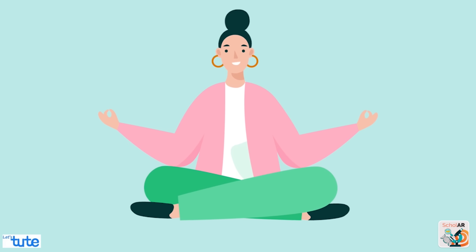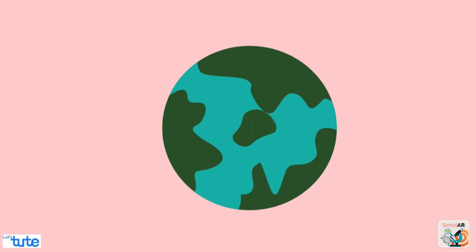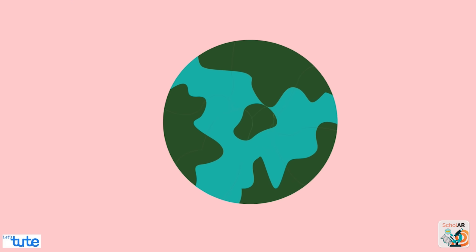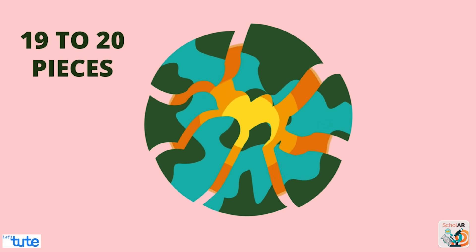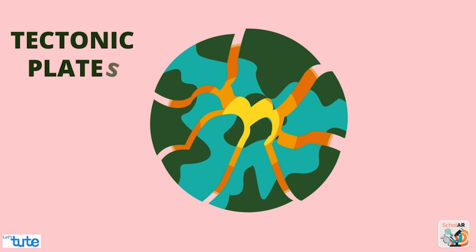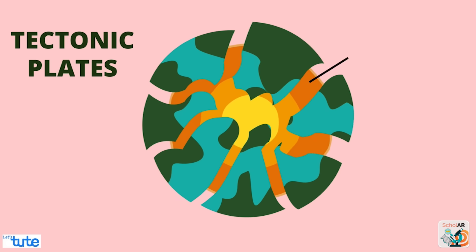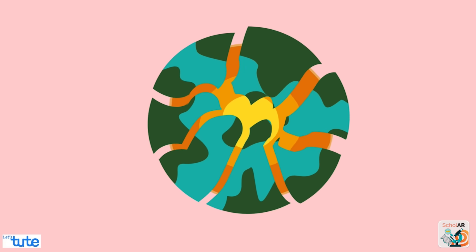Earth is not just one piece — it is made up of jigsaw puzzles of around 19 to 20 pieces which are called tectonic plates. These plates are placed on a hot, partially molten layer of Earth's mantle, and this is the reason why these pieces are continuously moving.